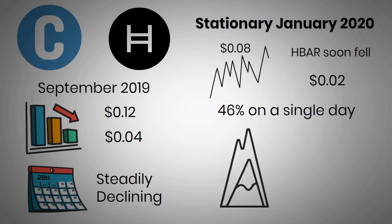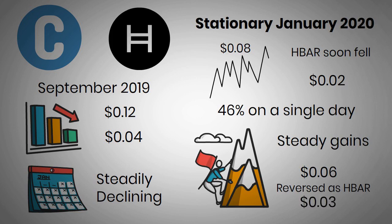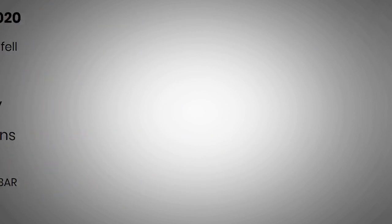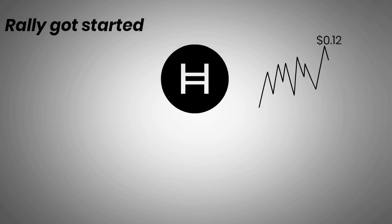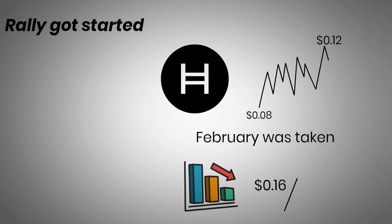From there, prices recovered slightly, making some steady gains until reaching a high of $0.06 in August. The trend then reversed as HBAR dropped back to $0.03 in September, and it was still trading at this level by the end of the year. The rally got started almost immediately in 2021, as HBAR surged above $0.12 for the first time in January, before pulling back to $0.08 at the end of the month. February saw another surge followed by a pullback, with prices reaching a high above $0.16 and then returning to $0.11.